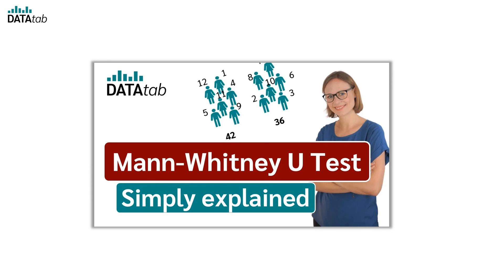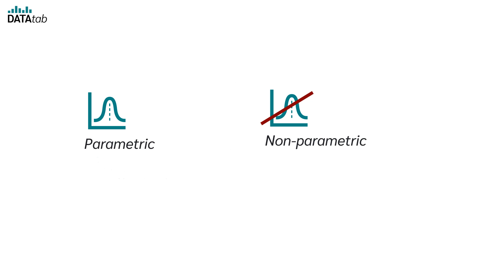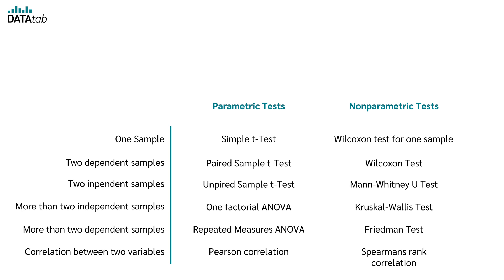If you want to know more about the Mann-Whitney-U test, check out my related video. To summarize: raw data are used for parametric tests and the ranks of the raw data are used for nonparametric tests. The hypothesis test you use usually depends on how many variables you have and whether it is an independent or dependent sample. In most cases, there is always a nonparametric counterpart to parametric tests, so if you do not meet the assumptions for the parametric test, you can use the nonparametric counterpart.